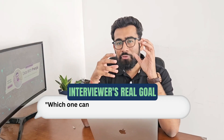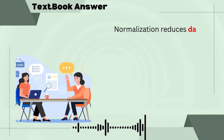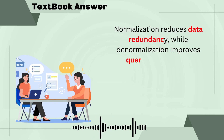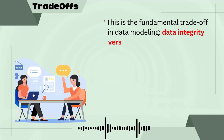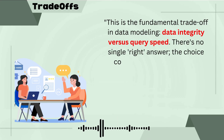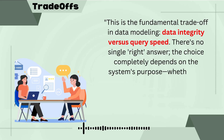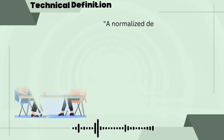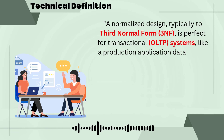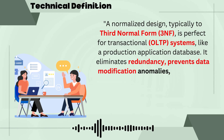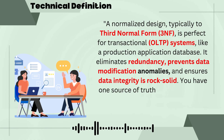The interviewer's goal here is to understand which one to use where and what the trade-offs are. A normal candidate answers: normalization reduces data redundancy while denormalization improves query performance. Following our framework, we talk about the trade-off first. This is the fundamental trade-off in data modeling: data integrity versus query speed. There is no single right answer — the choice completely depends on whether the system is OLTP or OLAP. A normalized design, typically to third normal form, is perfect for transactional systems like a production application database. It eliminates redundancy, prevents data modification anomalies, and ensures data integrity in rock-solid form — you have one source of truth for each piece of information.